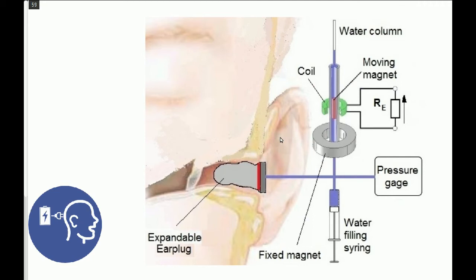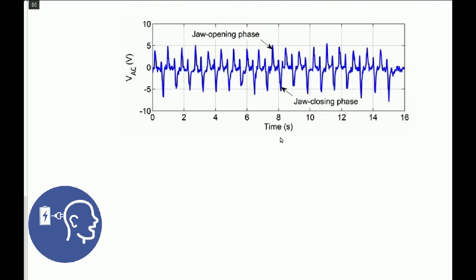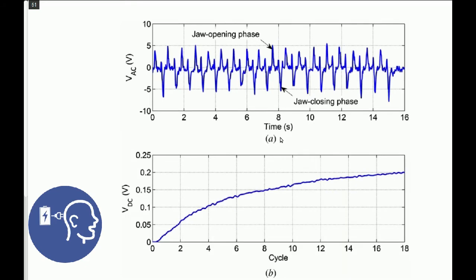So the very first experiment we ran was simply having this same earplug you've seen, so bladder filled with water here. So it was not cured, it was liquid. And the liquid was moving a little magnet inside the coil and you would have some induced currents. And using that demo, we were here chewing for 16 seconds on a burger or maybe a chewing gum. And you can see clearly the jaw opening and jaw closing phase with voltage up to plus or minus 5 volts with that electrodynamic system. And you could obviously recharge some capacitor if you were interested.